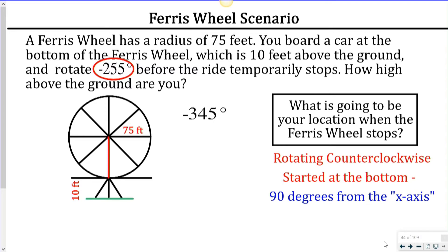So where is negative 345 degrees approximately? The coterminal angle would be 15 degrees — 360 minus 345 equals 15. So we're 15 degrees above the x-axis, right about here on the ferris wheel.